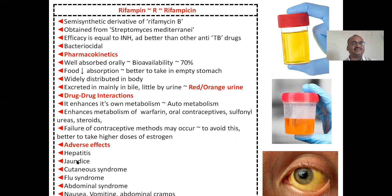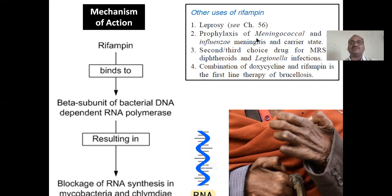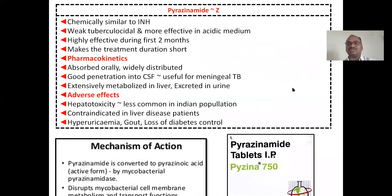Adverse effects of rifampicin include hepatitis and cholestasis. Mechanism of action: rifampicin binds to the beta subunit of bacterial RNA polymerase, resulting in plugging of RNA synthesis in the organism. Other uses: rifampicin is also used for leprosy, prophylaxis of meningococcal infections, as second or third choice for MRSA, and in combination with doxycycline for brucellosis.